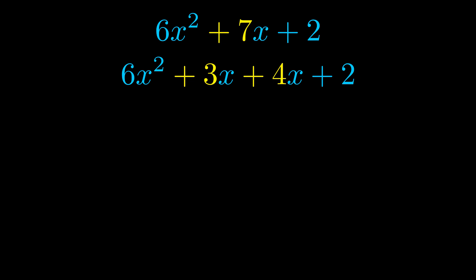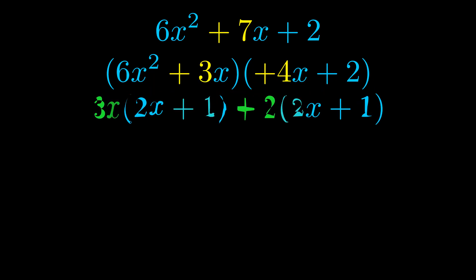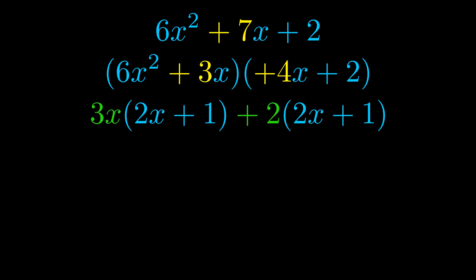Once we've done this, we go ahead and put parentheses around the first term and the last term. And we do that so that we can take the greatest common factor out of both terms. We can see the greatest common factor is now outside in green.